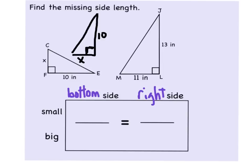I'm going to go ahead and fill in that information. The small triangle bottom is X. The small triangle right side is 10 inches. And on the big figure, the bottom side of the big figure is 11 inches, while the right side is 13 inches.